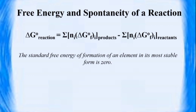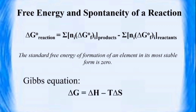Another way of determining the change in free energy of a reaction is by using the Gibbs equation. In this case, we use other thermodynamic properties of the system. The change in free energy is equal to the change in enthalpy minus temperature multiplied by the change in entropy.